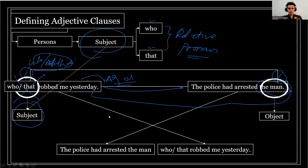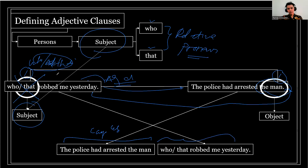So: 'The police had arrested the man who/that robbed me yesterday.' The second sentence — 'the police had arrested the man' — is the main sentence, and 'who/that robbed me yesterday' is the adjective clause derived from sentence one, modified by changing 'a man' into 'who' or 'that.' This clause explains or modifies 'the man.'